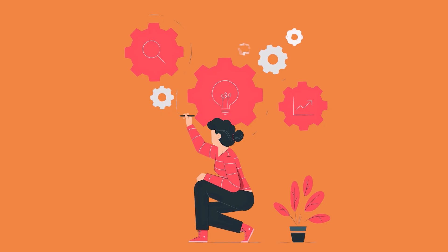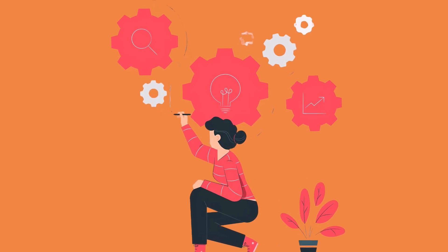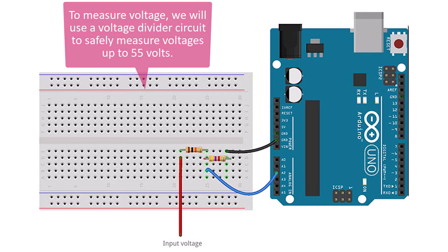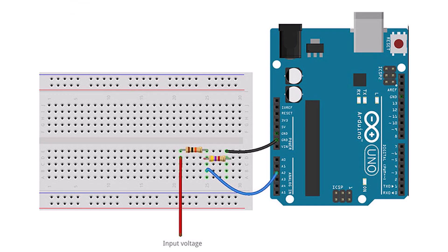Once you have gathered all the components, we can start building the multimeter. The first step is to create a voltmeter. To measure voltage, we will use a voltage divider circuit to safely measure voltages up to 55 volts. The voltage divider consists of two resistors, R1 and R2, connected in series.